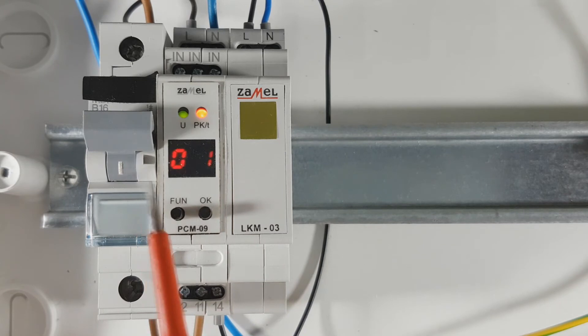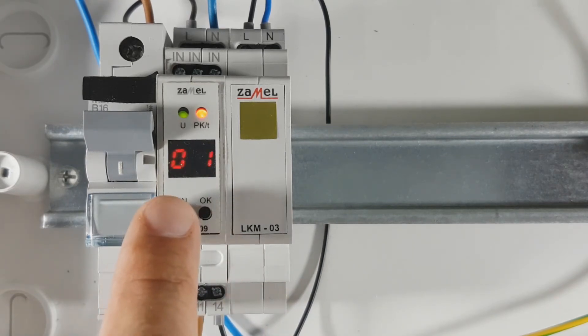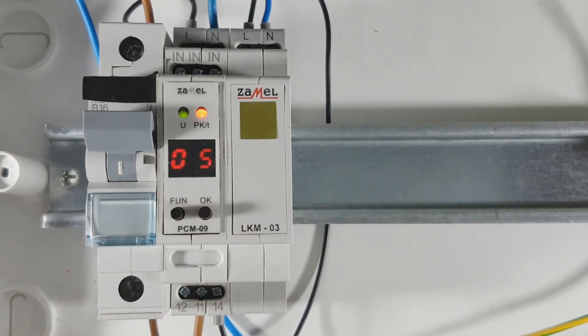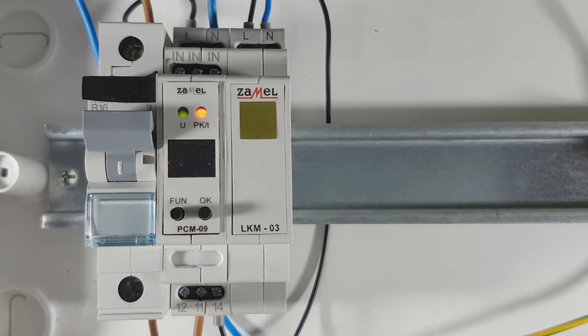Then automatically move to the seconds setting. The PK LED indicates this by changing its color. Using the function button, select the time by increasing the value. For example, the value of 5 seconds will be set. Confirm the settings by pressing the OK button.